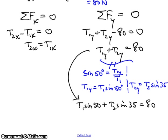Let's first put in the sine of 50 degrees, which is 0.77T1, I'm rounding off here, and the sine of 35 is plus 0.57T2 equals 80. So I don't have to worry about those numbers.